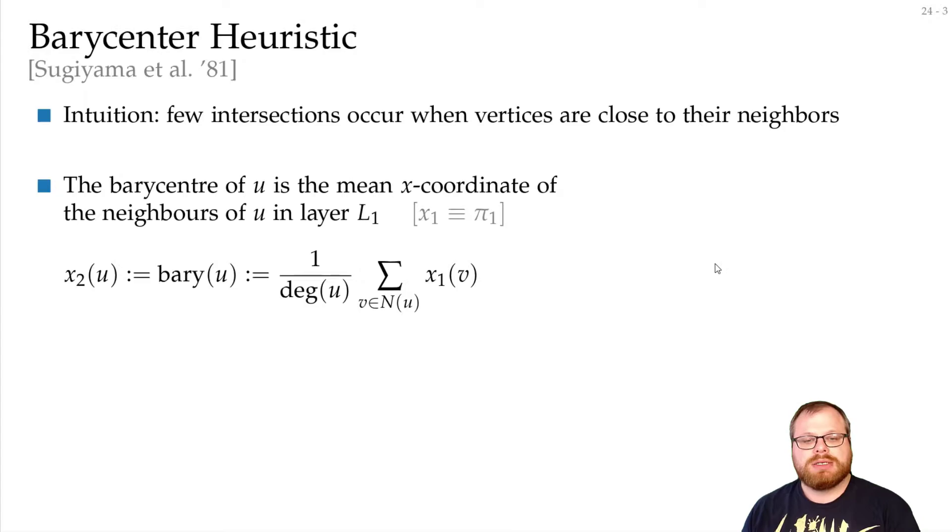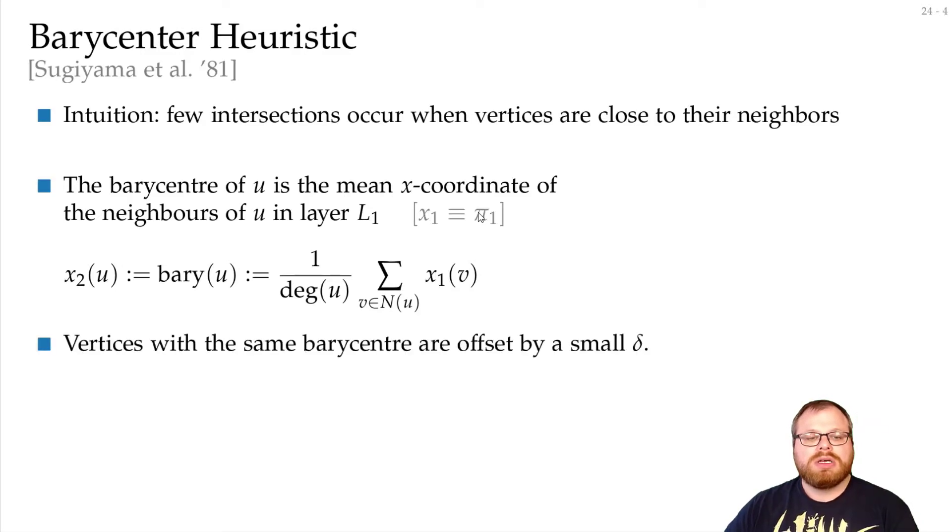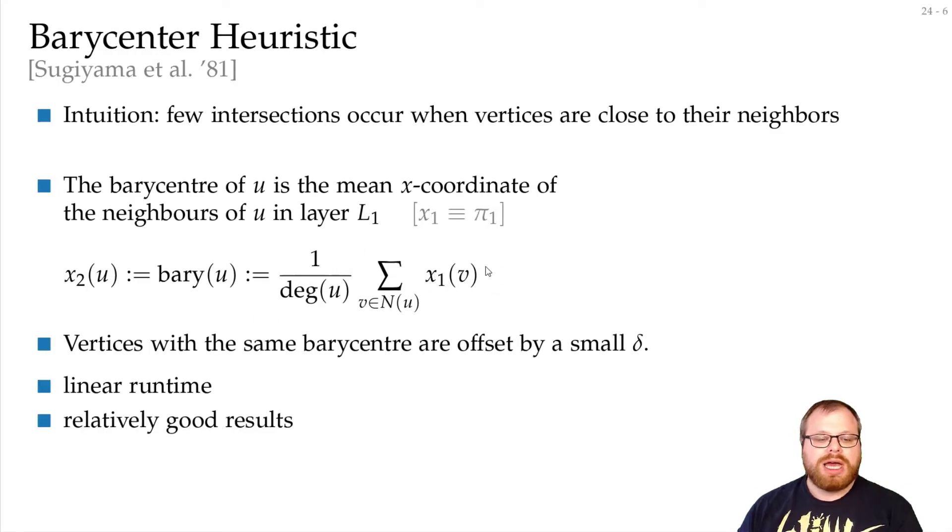We compute the barycentric coordinate, which is just the coordinate of the neighbors divided by the degree. As the coordinate, we just choose the order that we have on this layer. Vertices that get the same coordinate, we just offset by some small delta. This has a linear runtime - we only have to look at every neighbor for every vertex, and we get relatively good results.